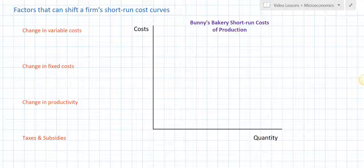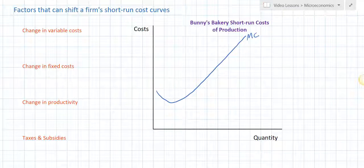Let's label those now. I'm going to start with my marginal cost curve. A firm's marginal cost curve slopes downwards and then upwards, reflecting the law of diminishing marginal returns. At higher levels of output, a firm experiences diminishing productivity from additional units of its variable resource that it employs, therefore the cost of additional units of output increases.